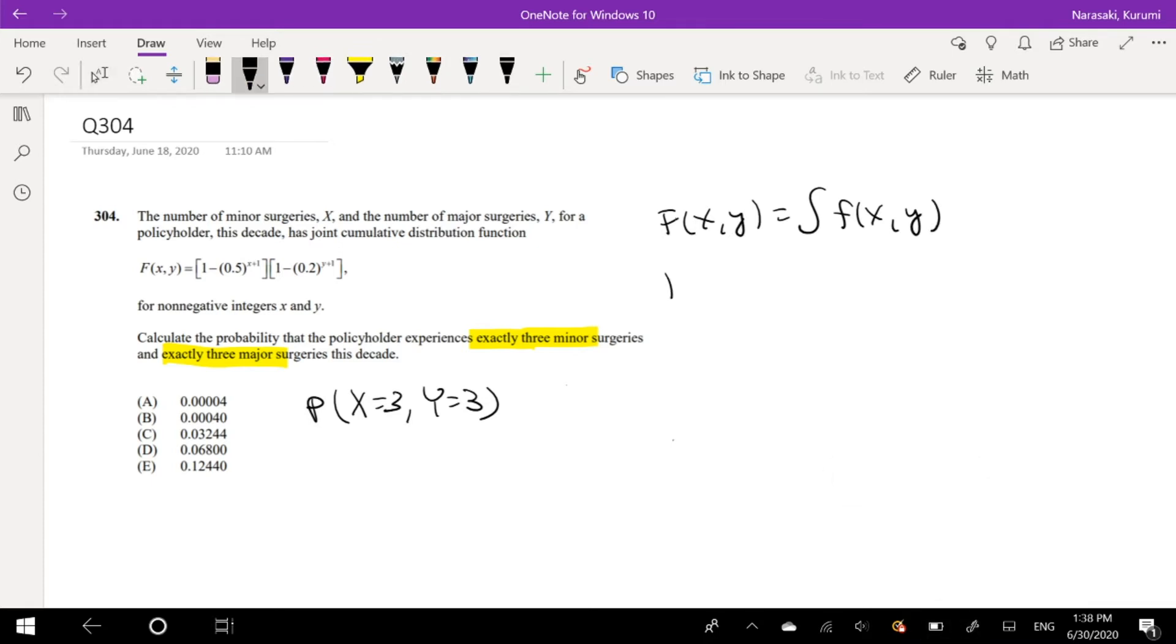And the derivative of this is when we find the probability density function. So we can take that approach or we can just think of it geometrically. And I think I'm going to think of it geometrically. Less math, less error, right?